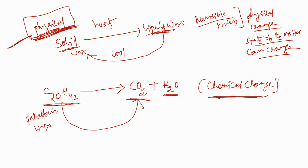In physical change, only the state of the matter can change — the formula never changes. At the same time, when the candle burns, the wick also lights and burns. The paraffin wax, C20H42, converts into CO2 and H2O. The formula is changing, so that is why burning of a candle is also a good example for chemical change.